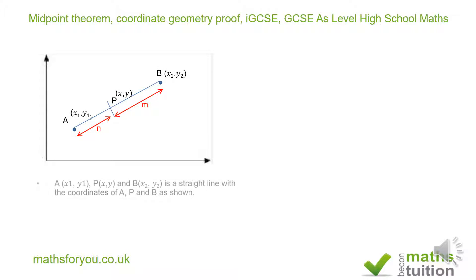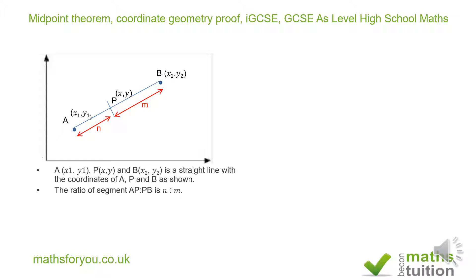We're given a line APB such that point A has coordinates x sub 1, y sub 1, and point B has coordinates x sub 2, y sub 2. The ratio of AP to PB is n to m and we're supposed to show or find the x coordinate of P in terms of x sub 1, x sub 2, and n and m.